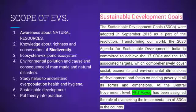Sustainable development goals were adopted in September 2015 as part of the resolution 'Transforming our world: the 2030 Agenda for Sustainable Development.' India is committed to achieving the 17 sustainable development goals and 169 associated targets, which comprehensively cover social, economic, and environmental dimensions. At the central government level, NITI Aayog has been assigned the role of overseeing the implementation of sustainable development goals.